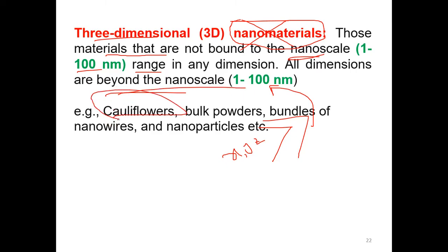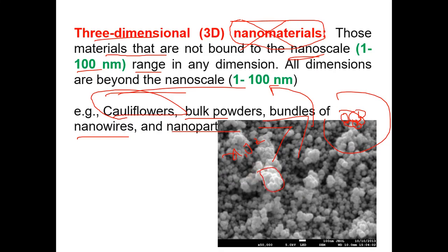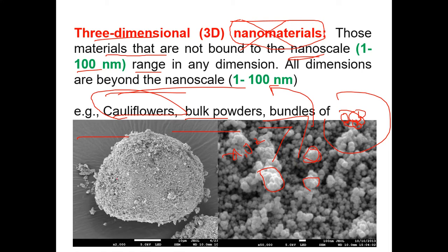An example is like a cauliflower — we also synthesize cauliflower shapes using a hydrothermal approach, as bulk powder. Like bundles of nanowires merged together, this is called agglomeration. Agglomeration means that when nanoparticles combine with each other, they make a big one. Here you cannot even see a single particle — it is an agglomeration, and this can be included in three-dimensional. This example is in micron size, around 10 microns, which is a huge thing. So this kind of material is called three-dimensional. I hope everything is clear — put your questions in the comments and we will have a discussion. Thanks for watching.